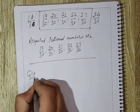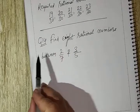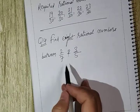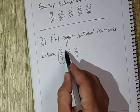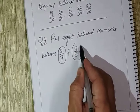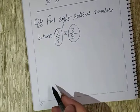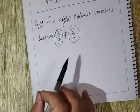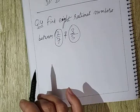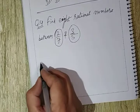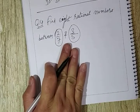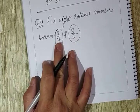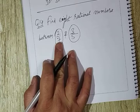Question number four: find 8 rational numbers between 2 by 7 and 3 by 7. The specialty here is that the denominators of these two numbers are not the same. If the denominators are not the same, our problem is to make them the same first, and once we do that the problem gets solved. If it still doesn't work, we can apply the upper method from the previous questions. To make denominators the same, we do a simple cross-exchange. For example if we have 7 here and 5 here, we exchange them.